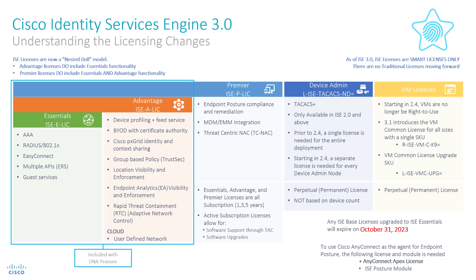Since the legacy Base and Plus licenses were included in the DNA Premier licensing for switches and wireless infrastructure, conventional wisdom would suggest that the new Advantage tier would be included moving forward.